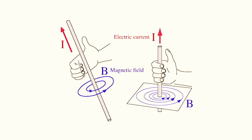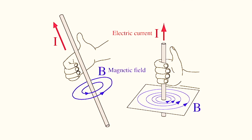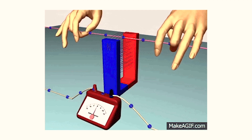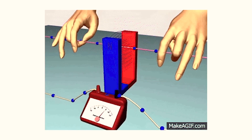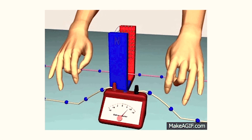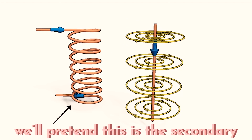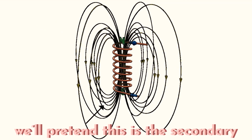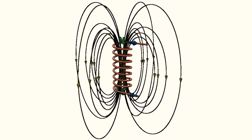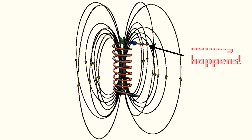Imagine a current-carrying wire placed perpendicular to, but inside of, a magnetic field — as in the case of a secondary coil of a transformer. If the wire and the magnetic field are static and unchanging, nothing happens. No current is induced.